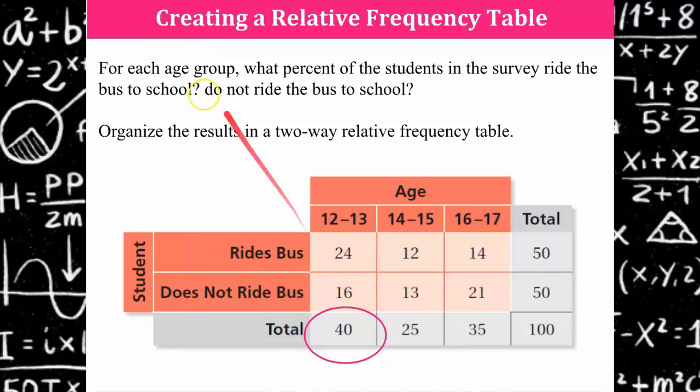In this category because we're being asked what percent of students in the survey ride the bus to school or do not ride the bus to school, it's what percent for each age group. We need to go to the total of the age group. Our denominator is not going to be out of a hundred, it's going to be what age group we're talking about. Let's do this age group first. There's 40 students in this age group.